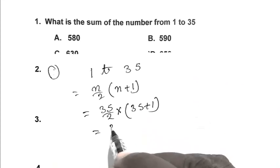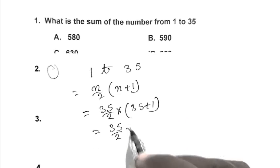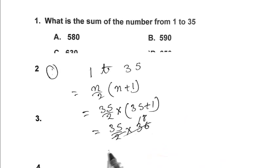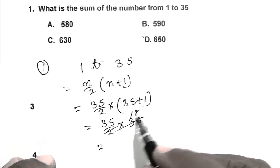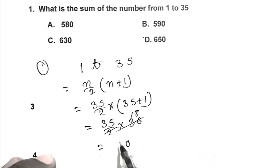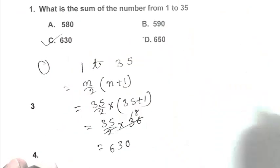That is 35 upon 2 multiplied by 36, which is 18 times 35, which gives us 630. So C is the right answer.